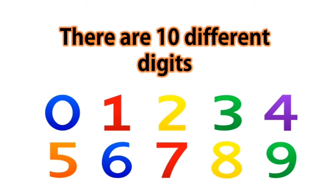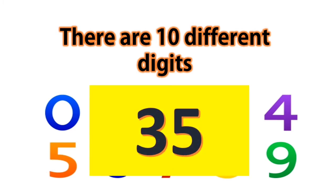For example, if we take the number three and the number five, together they are making the number thirty-five.